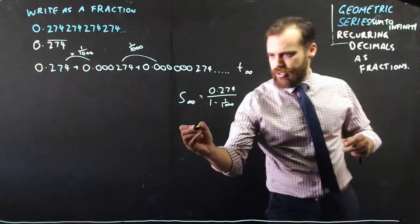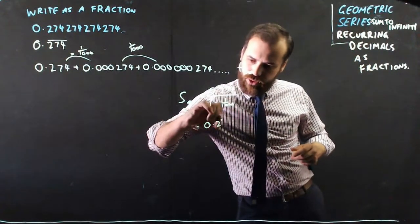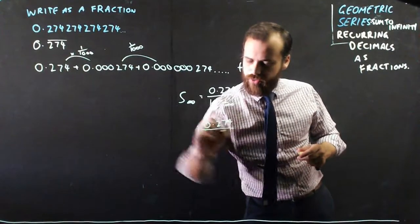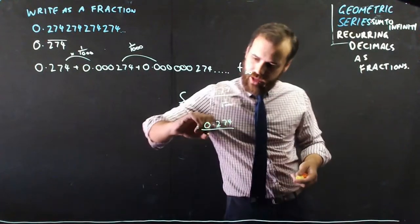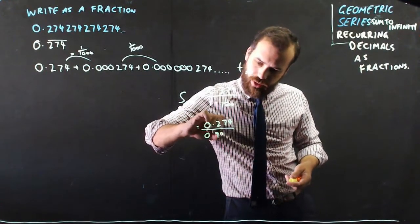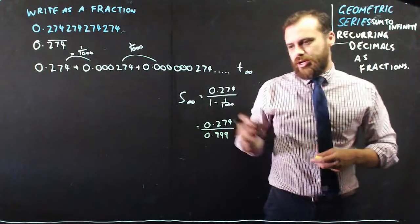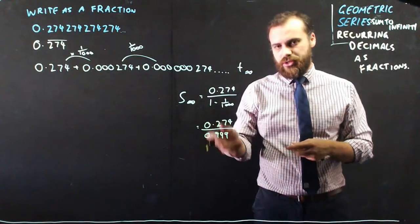Now, you could also write that as 0.274 over 1 minus 0.001, which would be the same as 0.999. So now I have 0.274 over 0.999.